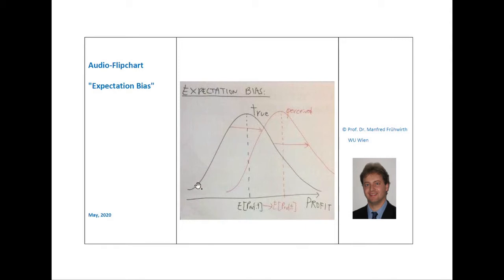In black, we see the true density function. This is the objective density. This is the density that someone would see who is not subject to any bias.